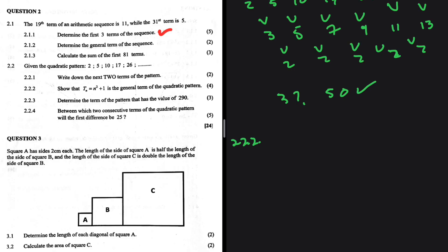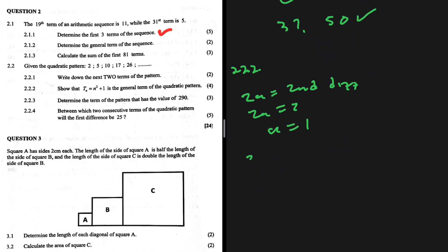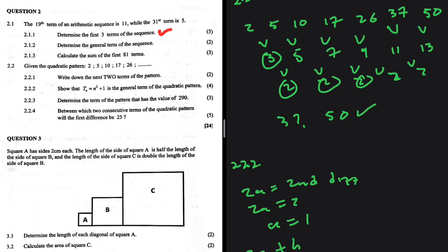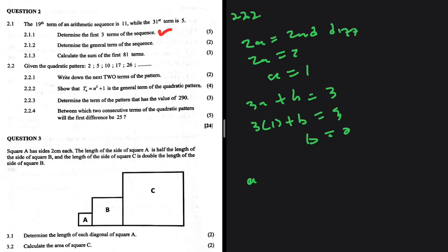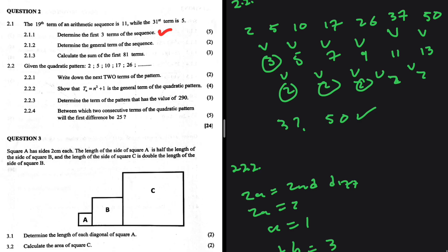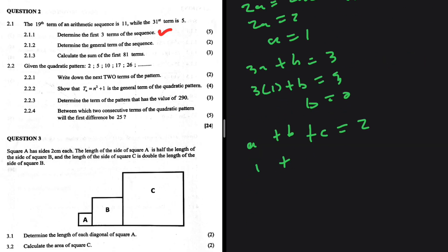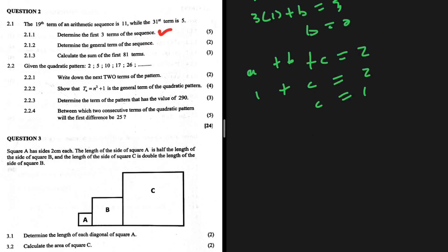For part 2.2.2, show that tn equals n squared plus 1. We know that 2a equals the second difference, so 2a equals 2, meaning a equals 1. Then 3a plus b equals t2 minus t1 equals 3, so 3 plus b equals 3, giving b equals 0. And a plus b plus c equals the first term, which is 2, so 1 plus 0 plus c equals 2, meaning c equals 1. Therefore tn equals n squared plus 1.